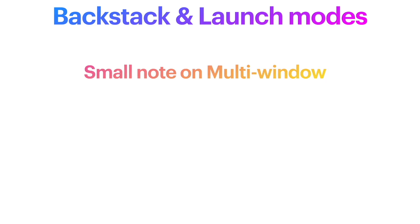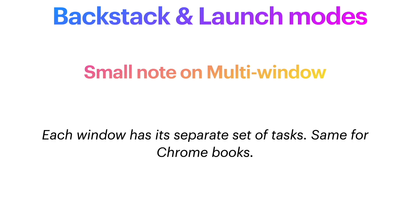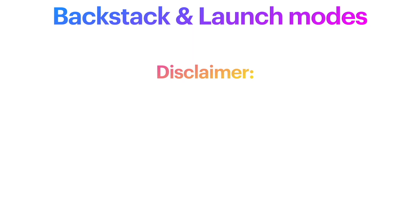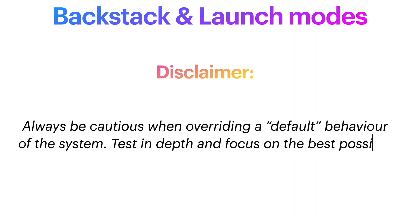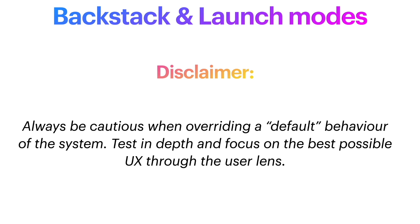A small note on multi-window mode: on Android 7 and later, each window has its separate set of tasks. Same for Chromebooks — the system manages tasks or groups of them on a per-window basis. Now, a small disclaimer: the Android documentation suggests to be cautious when disrupting the default behavior of the system. Android is a powerful framework that allows us to bend the rules sometimes, but that poses risks. So always test in depth and try to see things through the user's lens, as user experience is always the most important factor.